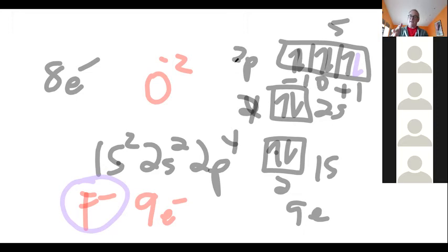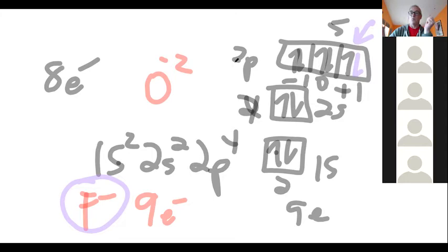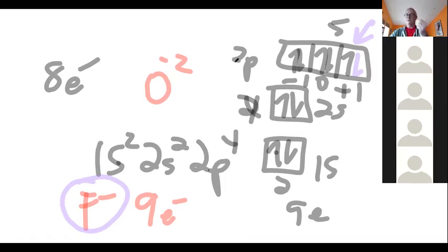All the halogens in the group before the noble gases — fluorine, chlorine, iodine, bromine — they're all minus one as ions. Why? Because they all have one space in the P subshell for an electron to go. For fluorine that's in 2P, for chlorine 3P, for iodine 4P, and so on.